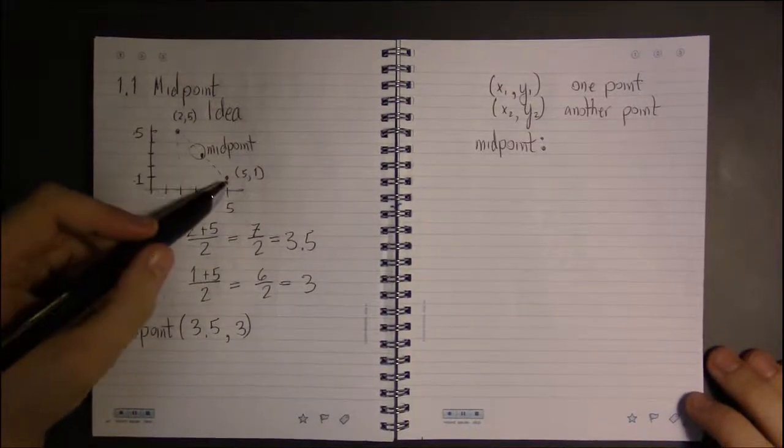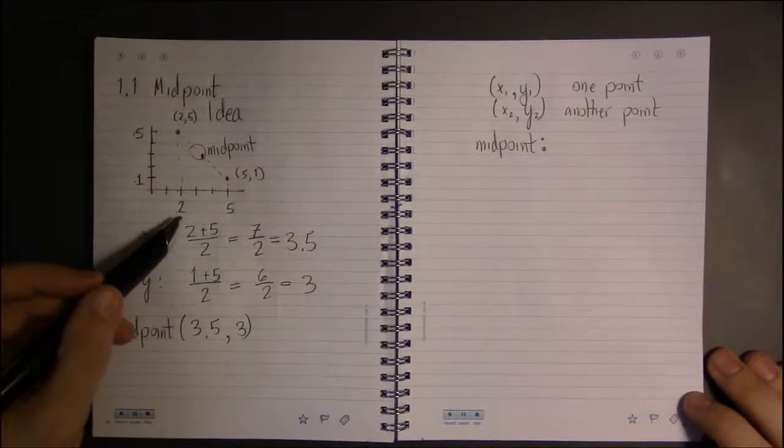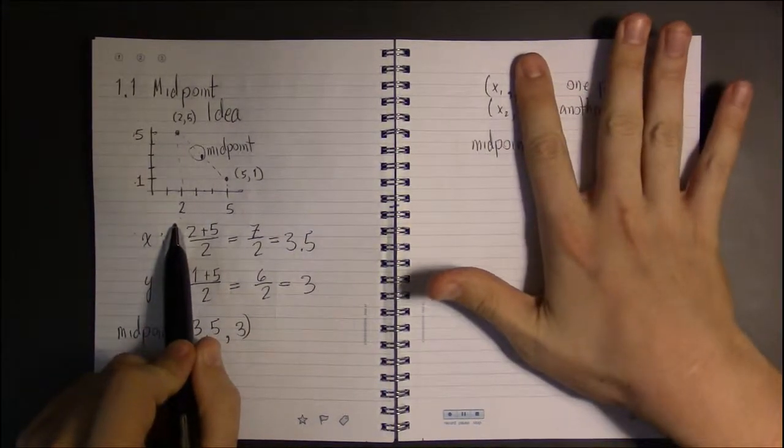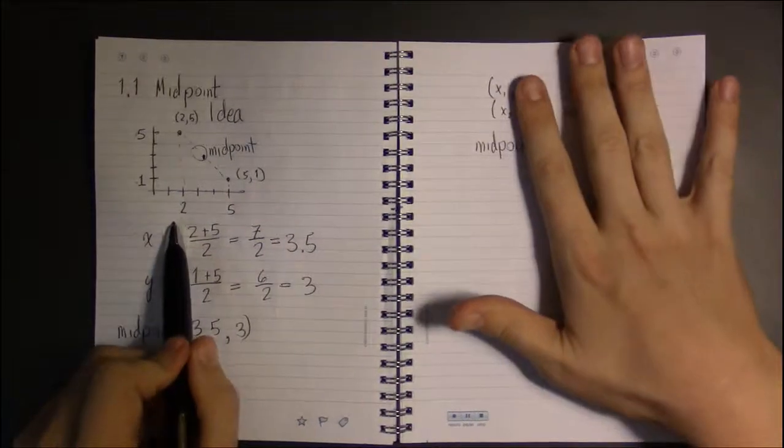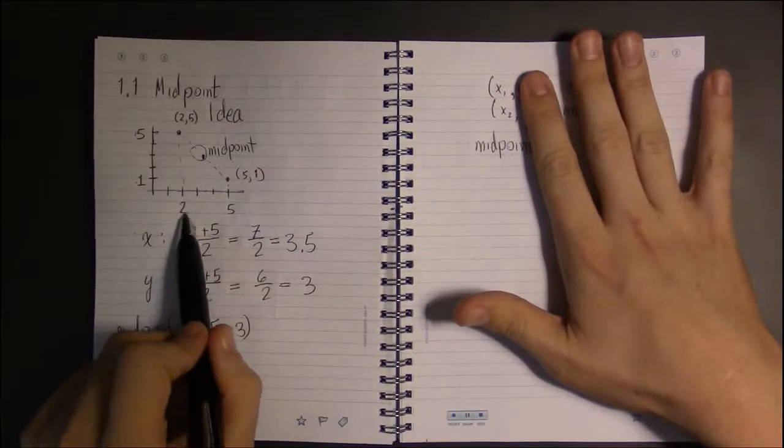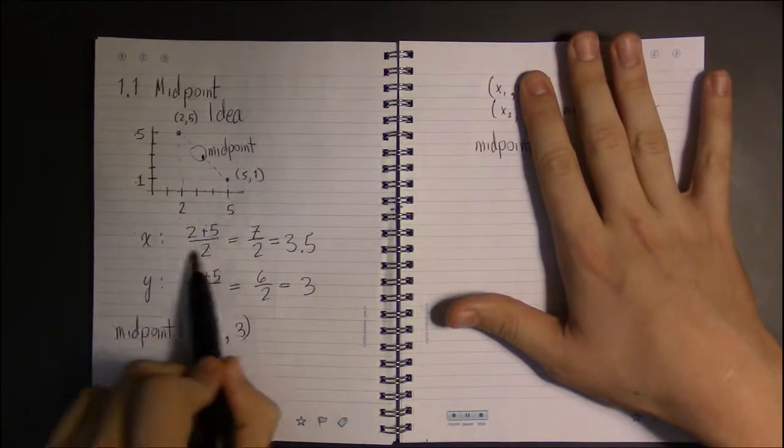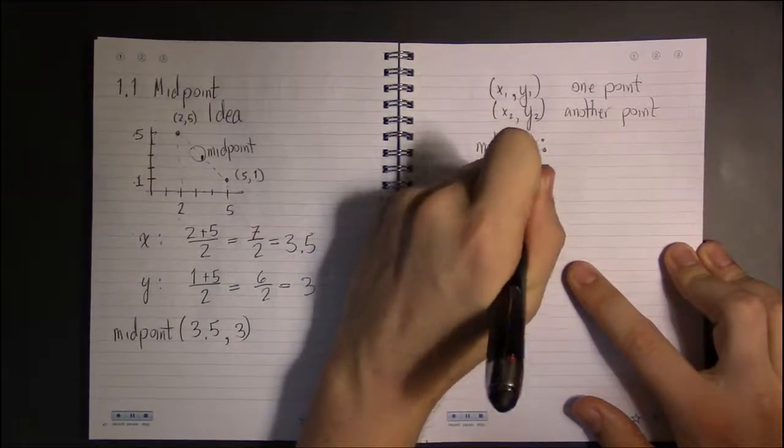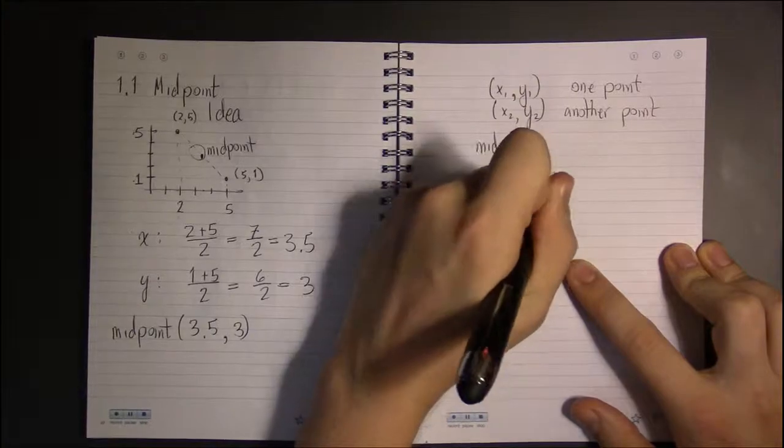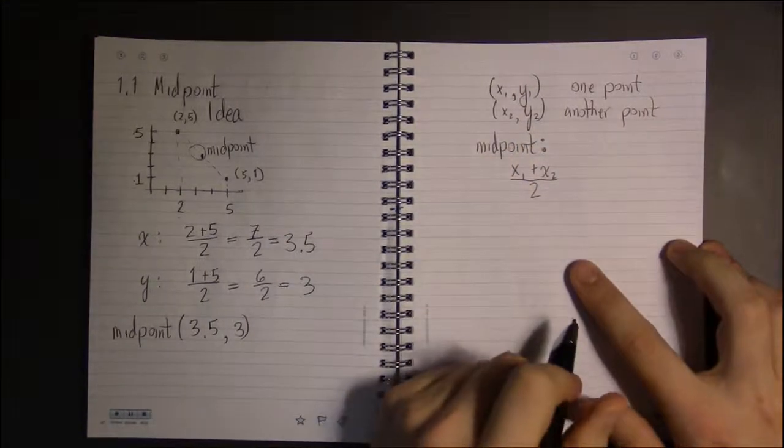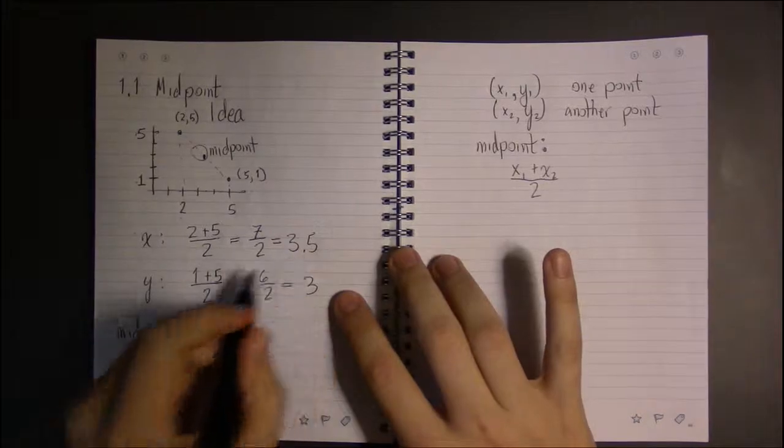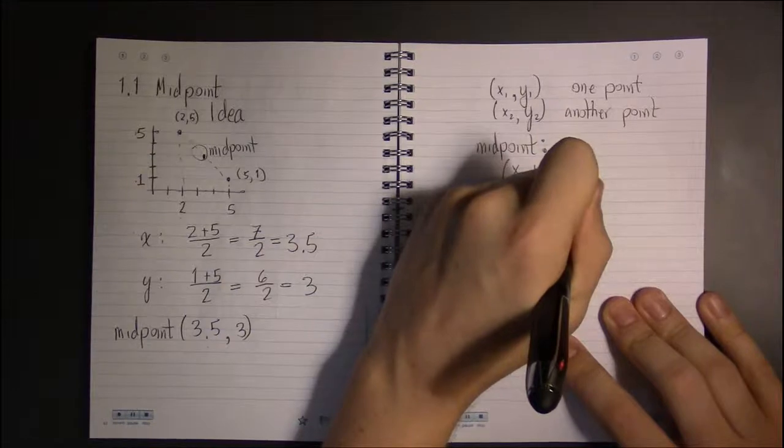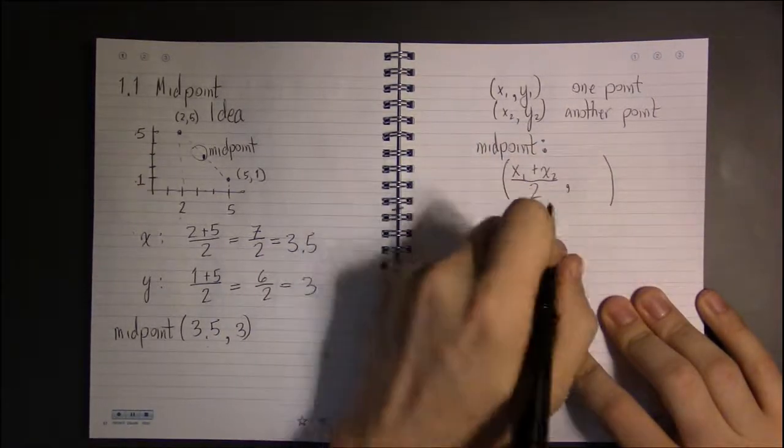- how do we get the midpoint? Well, with the x's, we just looked at the x's first, then we looked at the y's. When we looked at the x's, we said what's halfway between these two x's, and we realized we could just average the two numbers. So if we average the x's: x₁ plus x₂ divided by 2 - that became our x-coordinate.